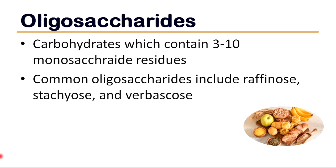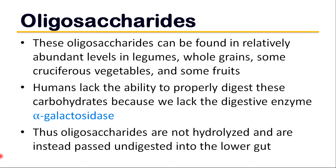Oligosaccharides are carbohydrates which contain 3 to 10 monosaccharide residues. There are different types of oligosaccharides in foods. Common oligosaccharides include raffinose, stachyose, and verbascose. These oligosaccharides can be found in relatively abundant levels in legumes, whole grains, some cruciferous vegetables, and some fruits.